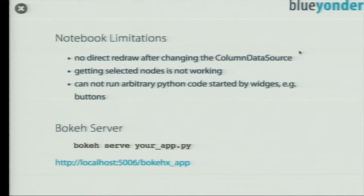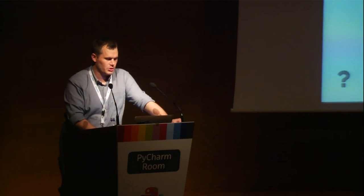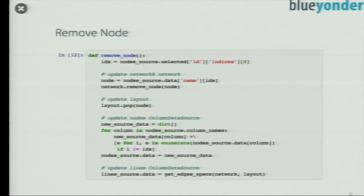But there is a problem. Bokeh is great, but it still has some problems — not everything is working in a notebook. You cannot redraw data sources automatically if you change a ColumnDataSource in a notebook. You can push your changes there, or you can create a push and it will redraw. If you run it in a Bokeh server, it will automatically redraw because it loops over it and checks for changes. Another problem is you cannot get back the selected values in a notebook — the list will always be empty. So you have to do this in a Bokeh server.